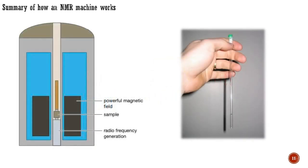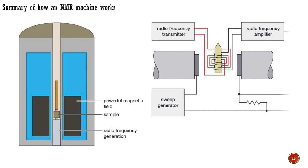We can now sum up how an NMR machine works. The sample of the unknown compound is dissolved in a suitable solvent, placed in a narrow tube, and put inside a very strong electromagnet. To even out imperfections in the sample, the tube is spun very fast by a stream of air. Inside the magnetic field, any atomic nuclei with a nuclear spin now possess different energy levels — for proton and carbon NMR, there are two energy levels. Inside the NMR machine, the sample is irradiated with a short pulse of radio frequency energy, which disturbs the equilibrium balance between the two energy levels.